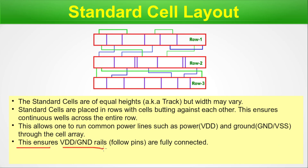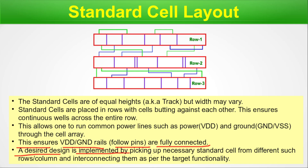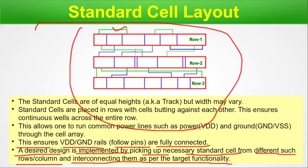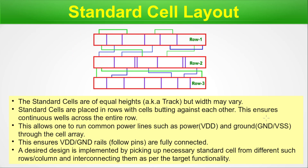This ensures VDD and GND rails and feed-through pins are fully connected. A desired design is implemented by picking up the necessary standard cells from different rows and interconnecting them as per the target functionality — as you can see in the diagram where green and blue wires interconnect the standard cells to achieve the ASIC or SOC design goal. Now you have the basic idea of how standard cells are laid down on a physical floor plan.